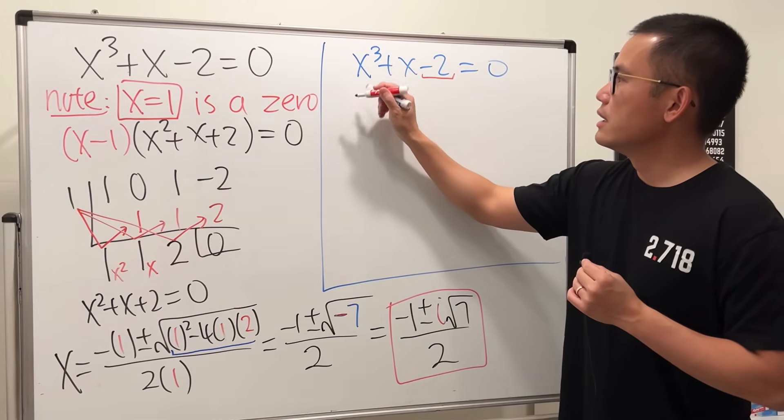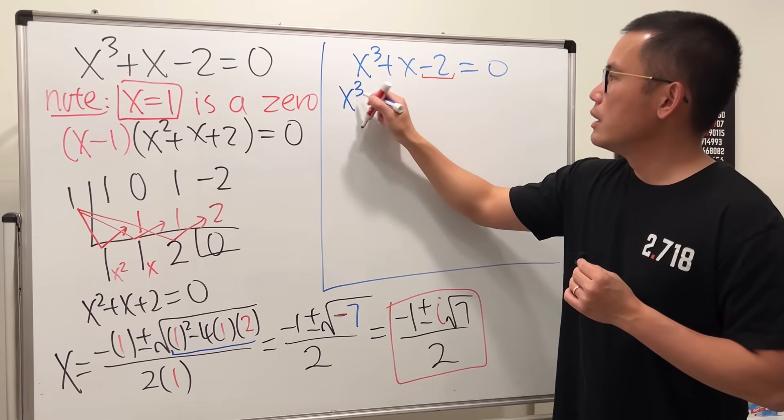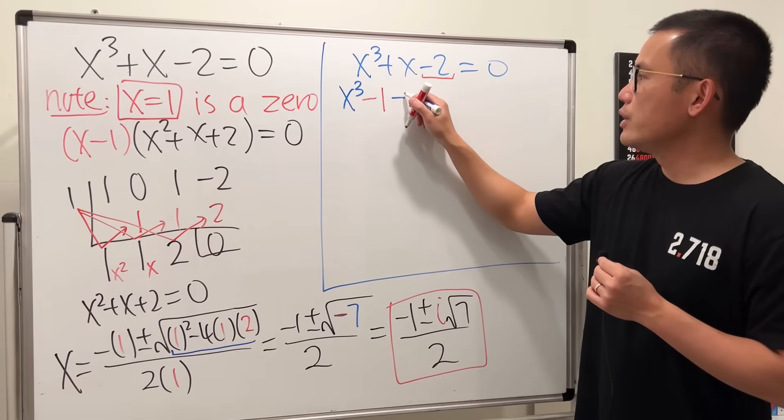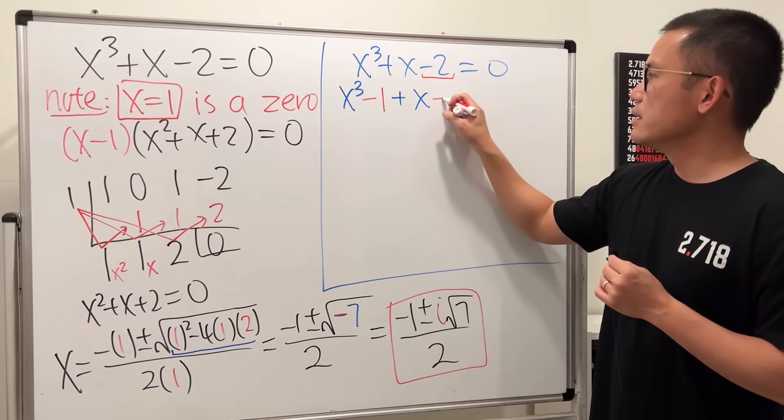I will write this down as this: I keep the x cubed, but then I will write this as minus 1, and I will continue plus x, and this is minus 1.